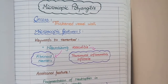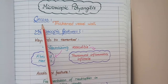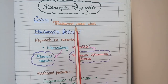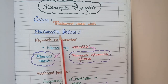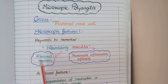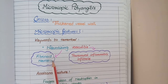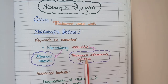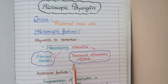Microscopic polyangitis grossly manifests as thickening of the vessel wall at the level of small vessels. Microscopically, it shows necrotizing vasculitis: necrotizing denotes fibrinoid necrosis, so you will see fibrinoid deposits and necrotic material, and vasculitis denotes transmural inflammatory cells — neutrophils, monocytes, and lymphocytes. Transmural means these inflammatory cells are present in all three layers of the vessel wall: tunica intima, tunica media, and tunica adventitia.